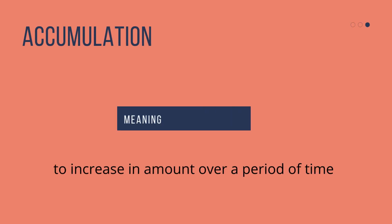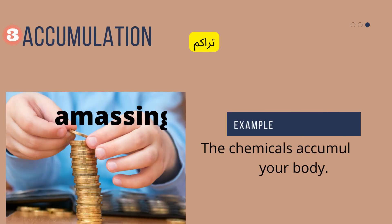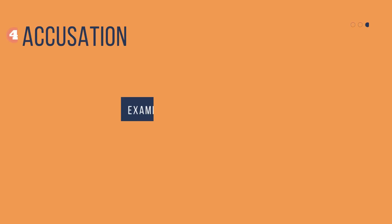Number three: accumulation. It means to increase in amount over a period of time. Accumulate is the verb; accumulation is the noun. It means amassing, especially wealth or money. Here is an example: the chemicals accumulate in your body — for smokers, for example. Chemicals accumulate over time.